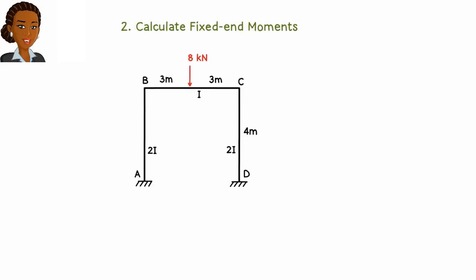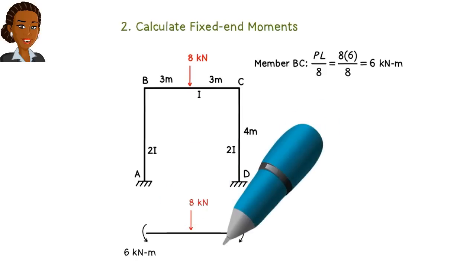Now, let's calculate the fixed-end moments. Member BC is subjected to a concentrated load at its midpoint. This results in a fixed-end moment of 6 kNm at either end of the member.